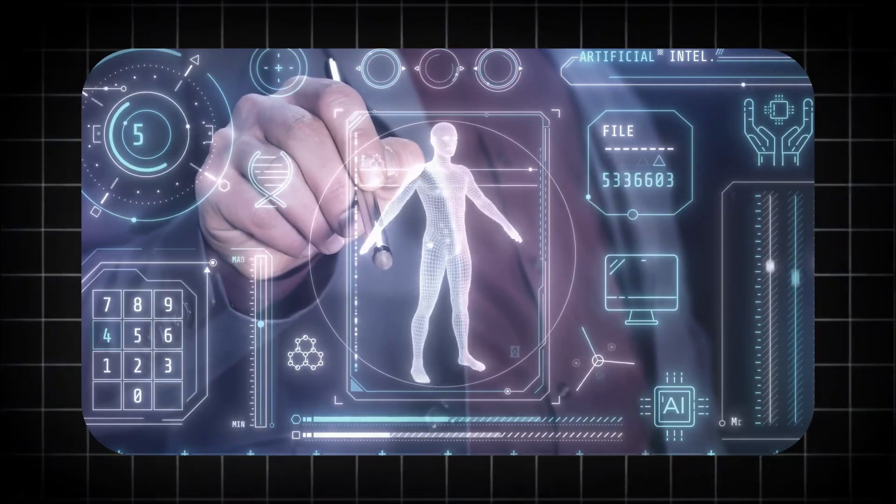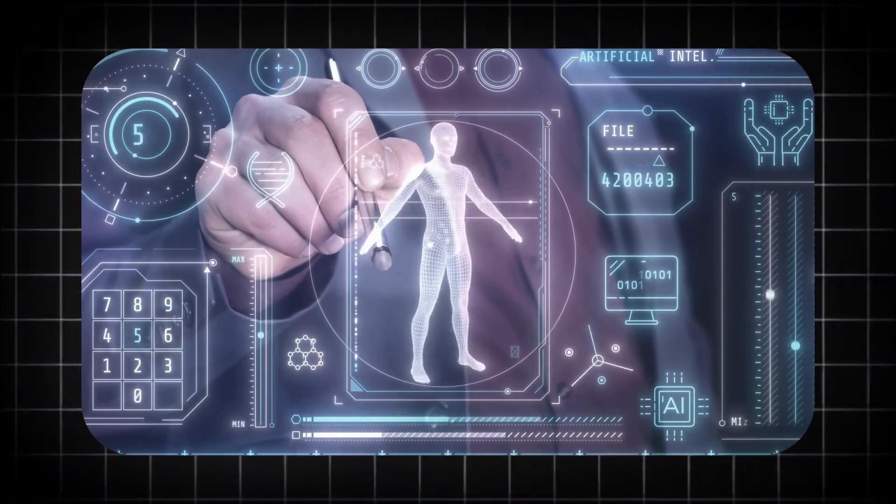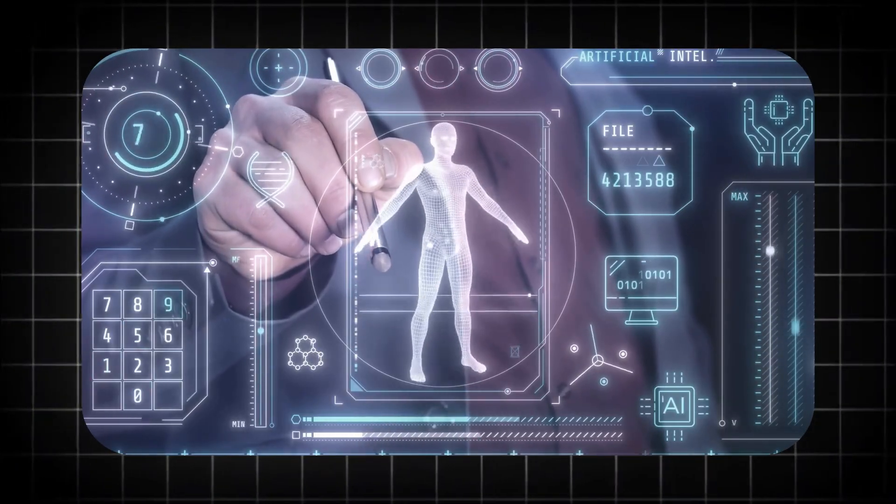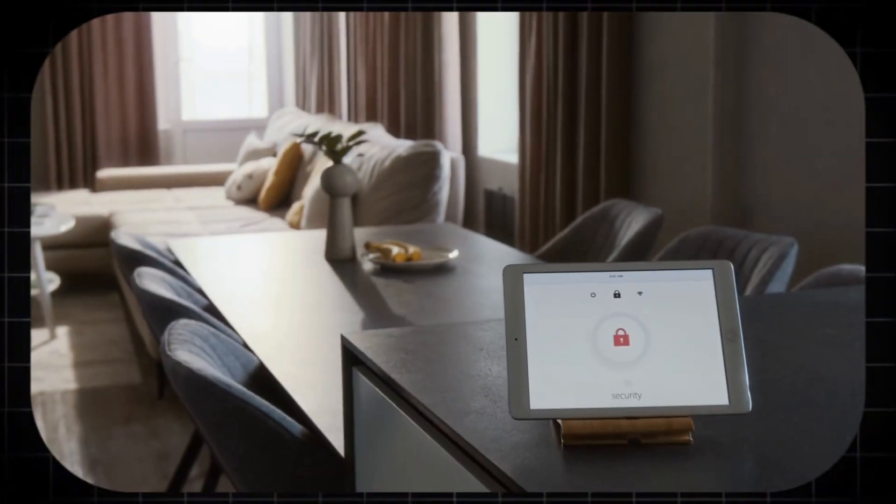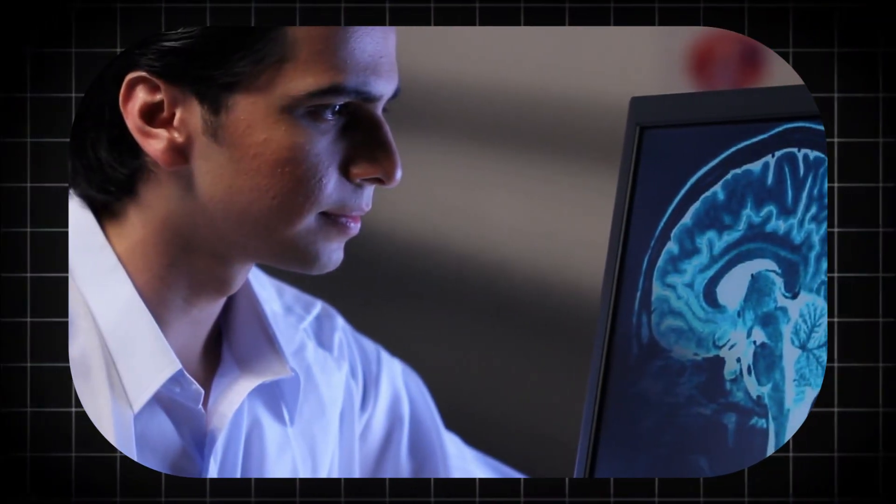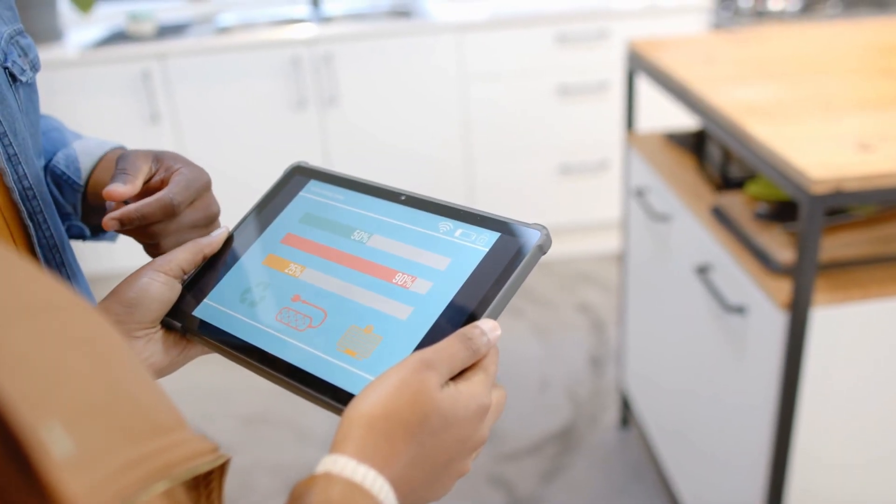Screens will evolve into dynamic, flexible surfaces. Foldable and rollable devices will transform mobile phones, tablets, laptops, and televisions into adaptable tools that conform to individual needs. The rigidity of current screens will be replaced by materials that bend, roll, or fold while retaining clarity, durability, and high resolution.